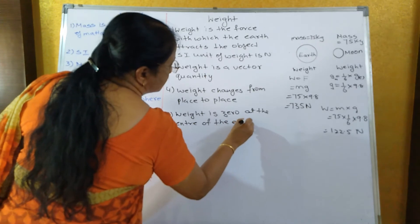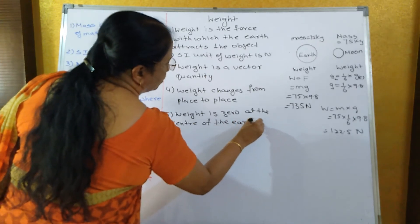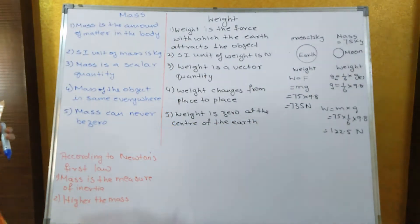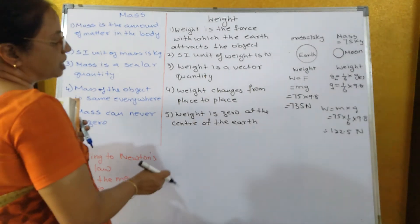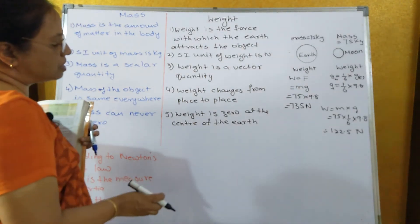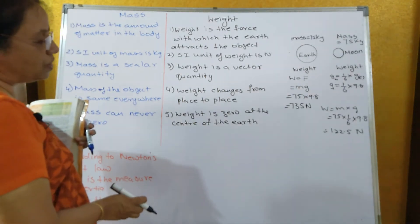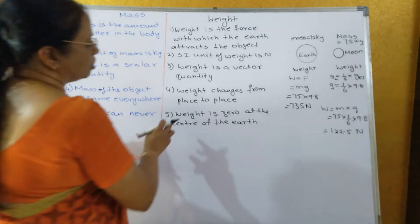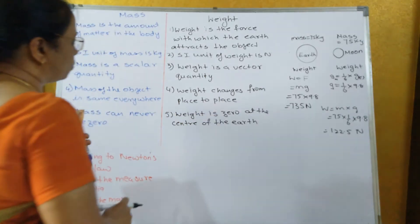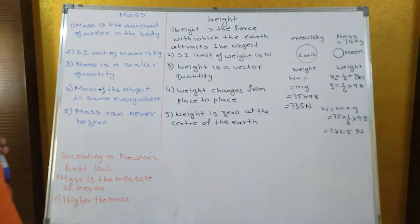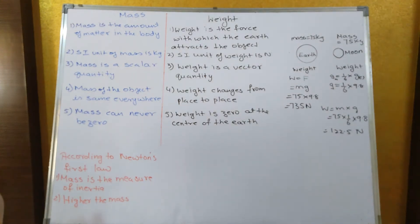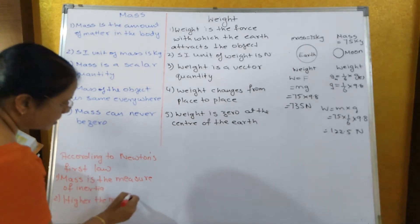We had discussed this in the third point of variation in the value of g. When the object is at the center of the earth, the gravitational pull is zero, and therefore weight is also zero. According to Newton's first law, mass is the measure of inertia. So higher the mass, higher is the inertia.